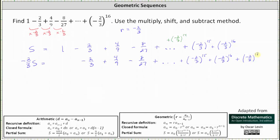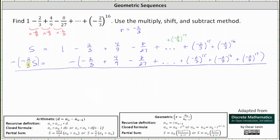Now we subtract the second equation from the first equation, which means we subtract here on the left and we subtract here on the right. On the left, s minus negative 2/3 s simplifies to s plus 2/3 s, which is 5/3 s.